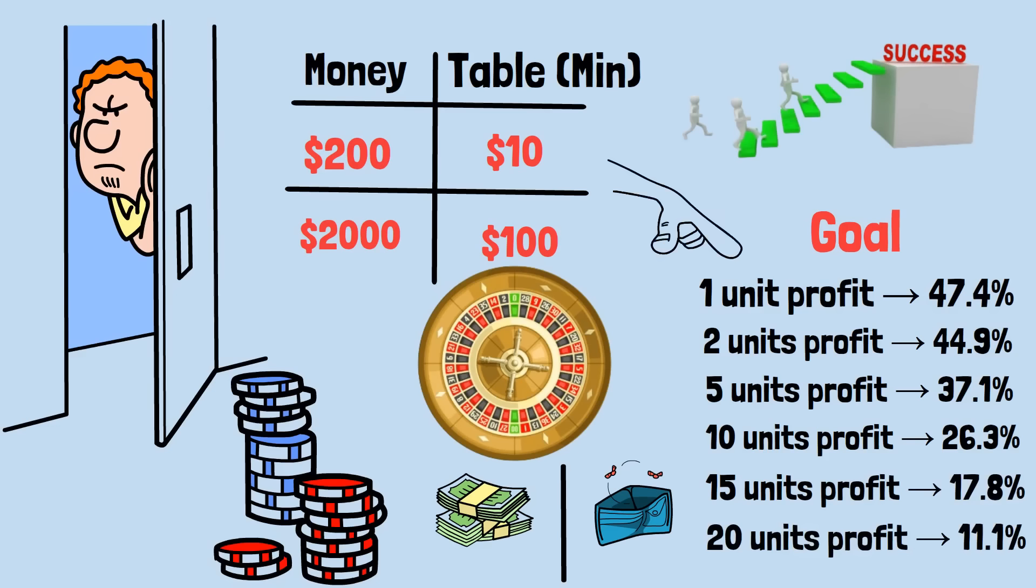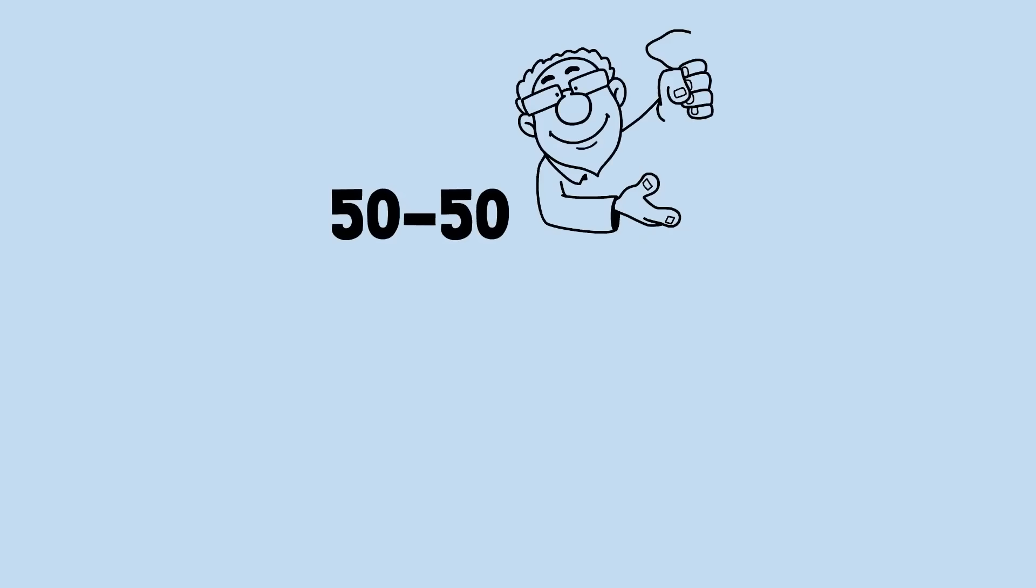Notice something interesting here. If you set modest goals, like winning just one or two betting units, you come close to even odds of achieving them. You almost have a 50-50 shot at walking away with a small profit.